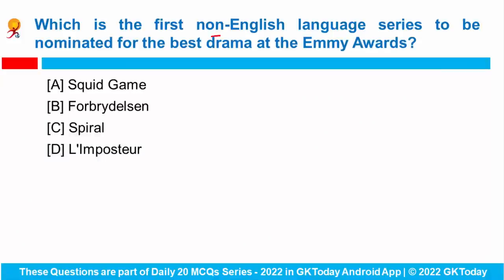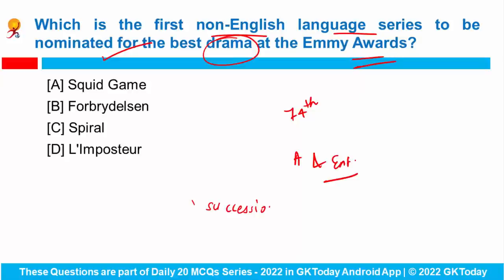Which is the first non-English language series to be nominated for best drama at the Emmy Awards? Nominations for the 74th Primetime Emmy Awards were recently announced — a major American award for performing arts and entertainment. Succession received the highest nominations at 25. South Korean survival drama Squid Game received 14 nominations and became the first non-English language series to be nominated for best drama at the Emmy Awards.